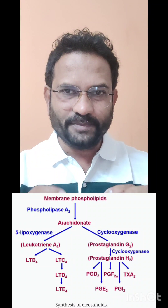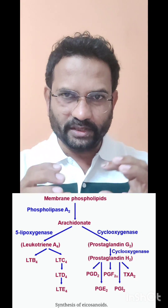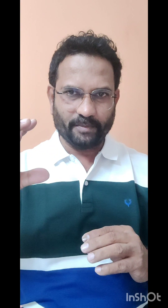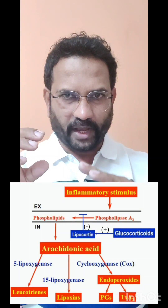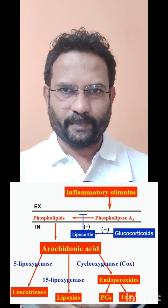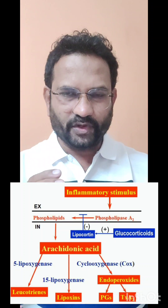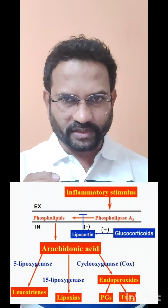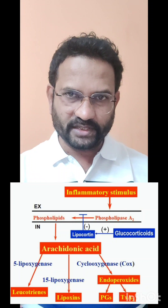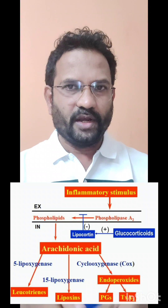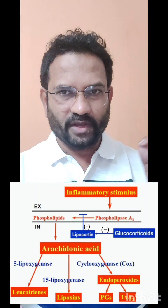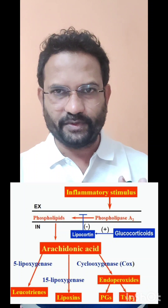Now the enzymes involved in the synthesis of these mediators: if Phospholipase A2 acts on the cell membrane, you get arachidonic acid. If cyclooxygenase acts on arachidonic acid, you get prostaglandins. If lipoxygenase acts, you get leukotrienes. Now lipocortin inhibits the action of Phospholipase A2.